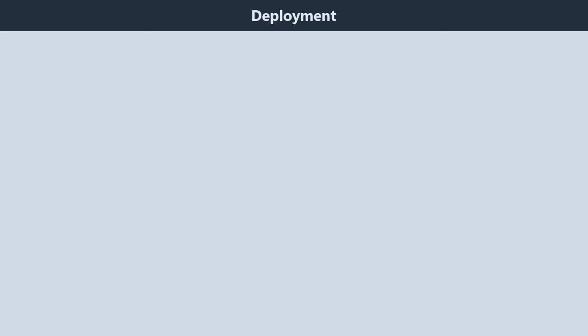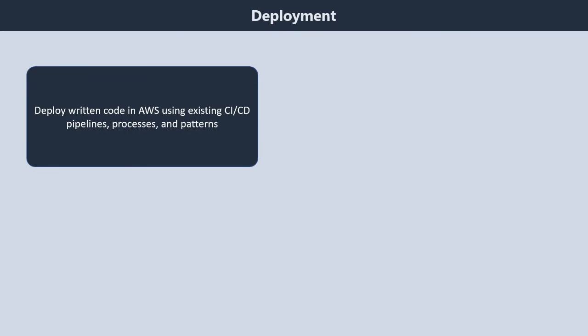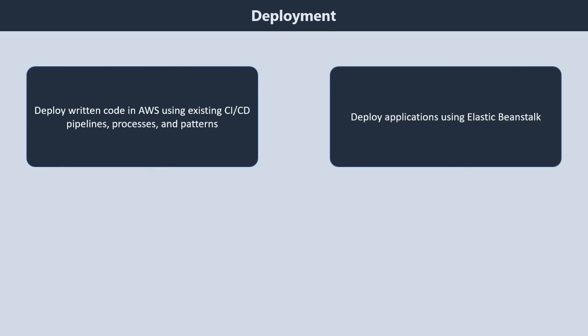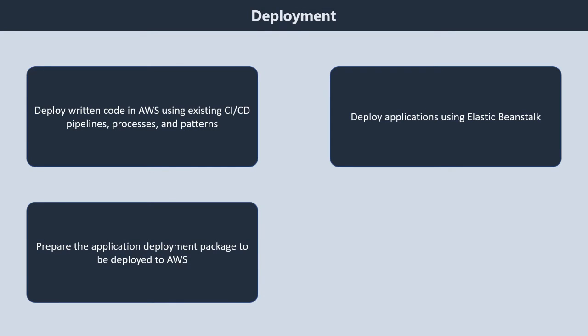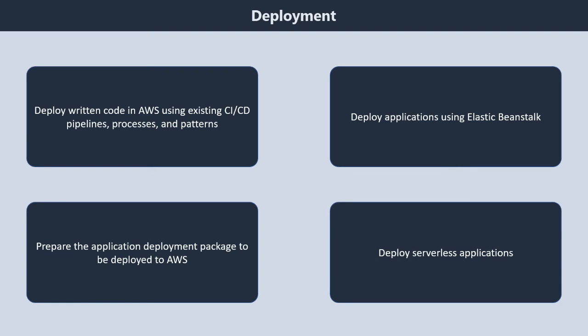Let us now discuss the course outline topics in detail. Domain 1, Deployment. It contains four subtopics. First, deploy written code in AWS using existing CI or CD pipelines, processes, and patterns. Second, deploy applications using Elastic Beanstalk. Third, prepare the application deployment package to be deployed to AWS. Fourth, deploy serverless applications.